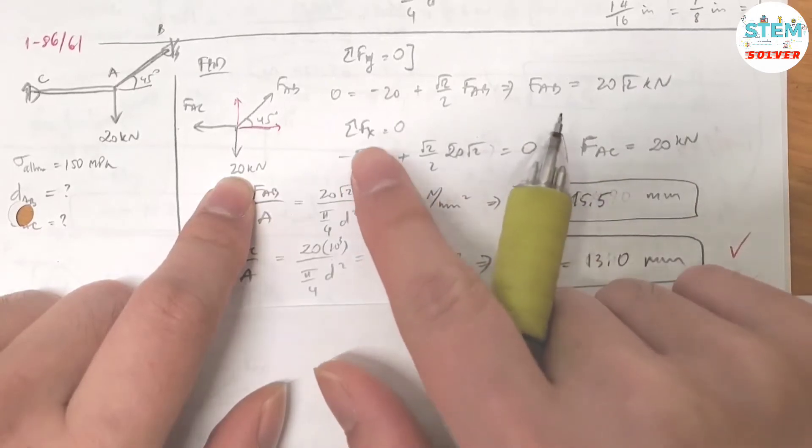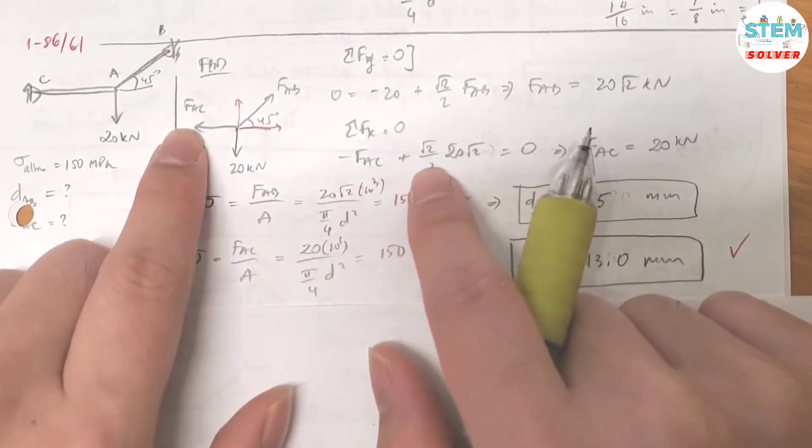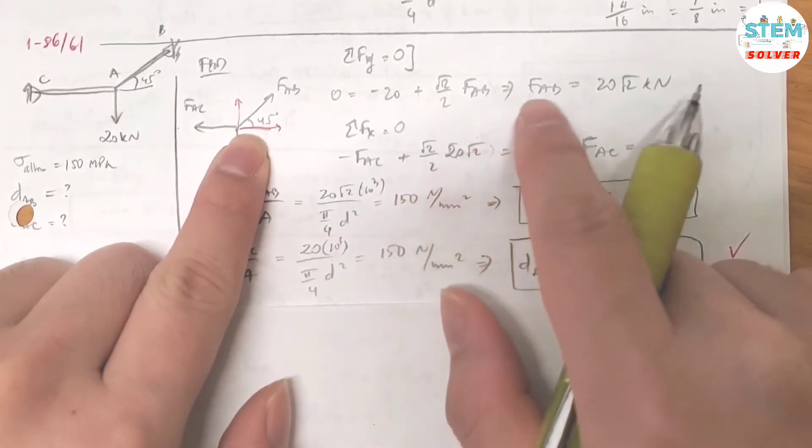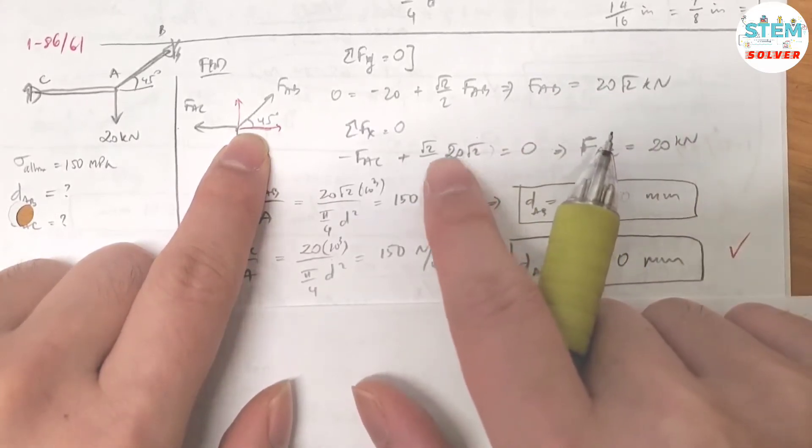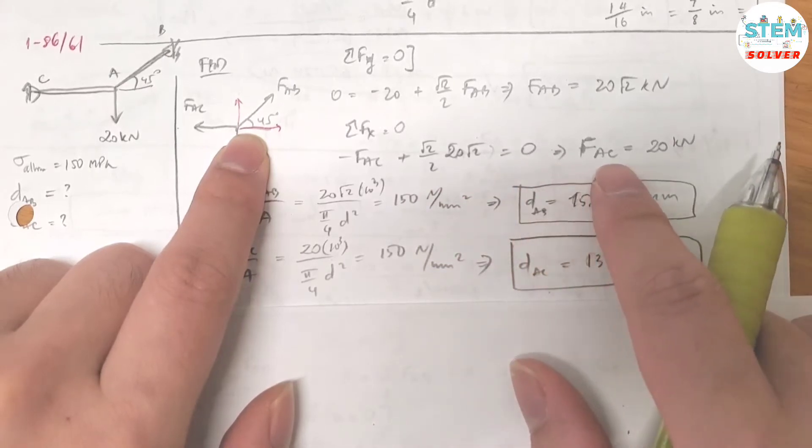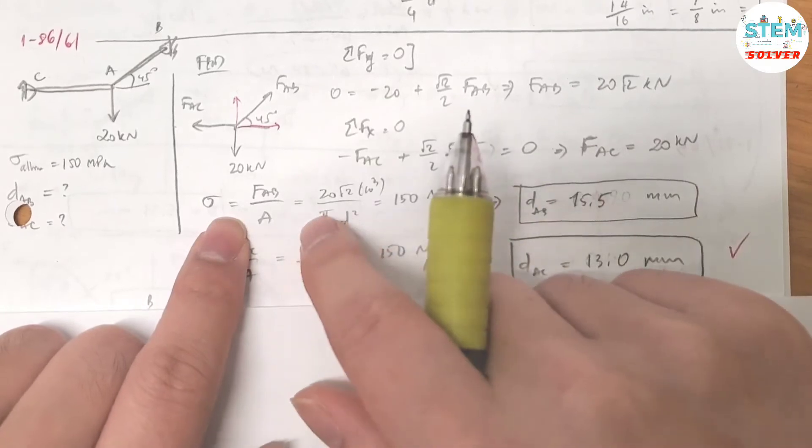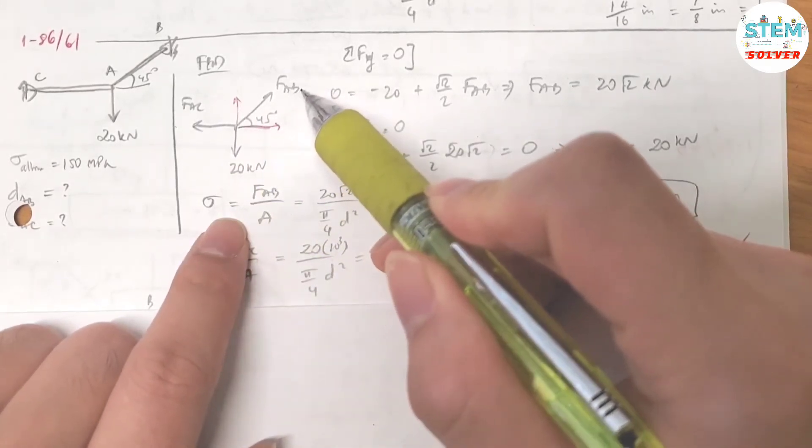Now let's do the summation about the x-axis. I have negative f plus fab times cosine 45. So f is 20 square root of 2, cosine 45 is square root of 2 over 2. Set that equal to 0. Then I found out that f is 20 kN. Now the normal stress in cable ab equals the normal force ab divided by the area.